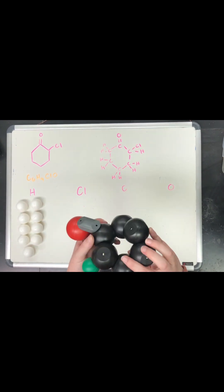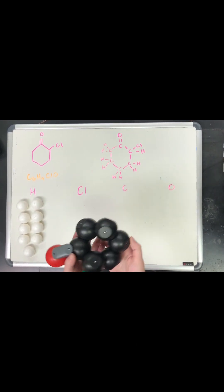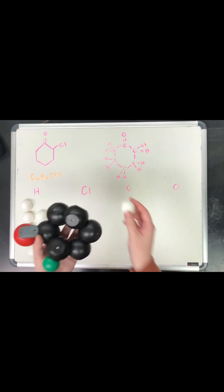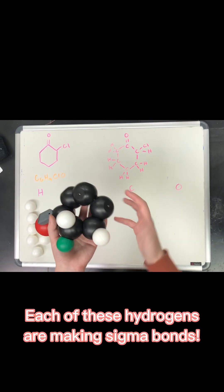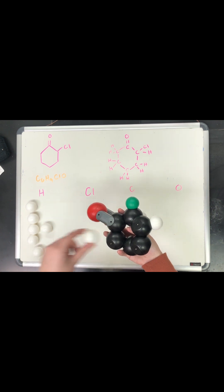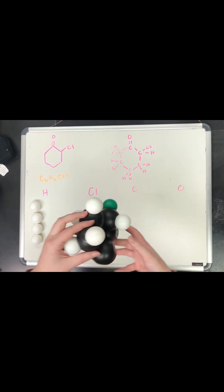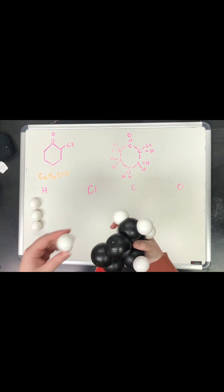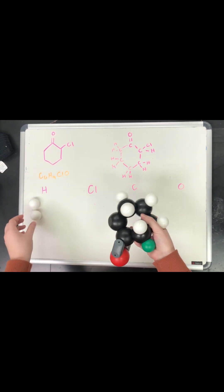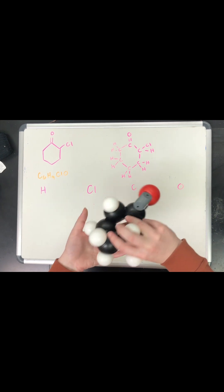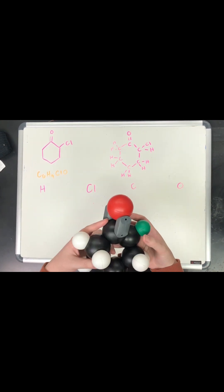Now to fill up the rest of these spaces that the carbons need, we are going to add our hydrogens onto them. So that's one, two, three, four, five, six, seven, eight, nine. So that uses up all of our atoms that we need.